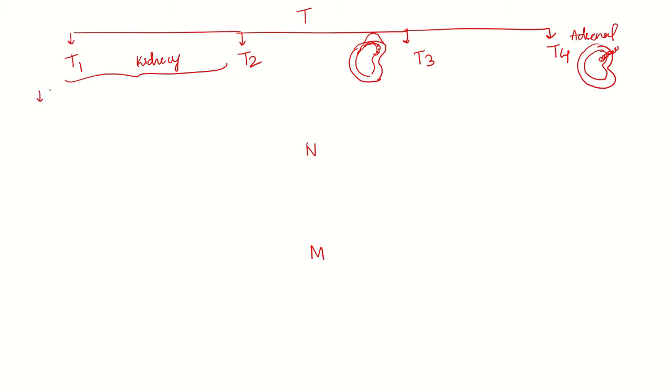So let's start with T1. In T1, we have T1a and T1b. This classification is simply based on the size of the tumor. So T1a is less than or equal to 4 centimeters. T1b is 4 to less than or equal to 7 centimeters.